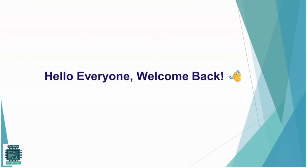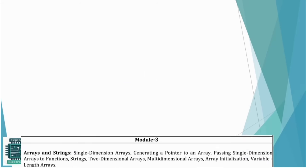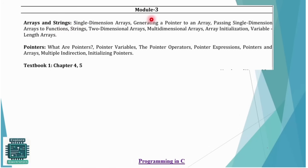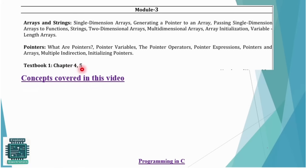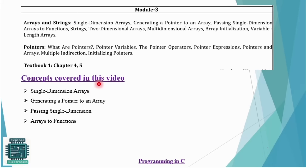Welcome back to Explore Electronics. Today we are going to start with Module 3, which is divided into two chapters. The first chapter is Arrays and Strings, and the second chapter is Pointers. In the first chapter we will see types of arrays, generating a pointer to an array, passing single dimensional arrays to functions, and how strings relate to arrays. In the second chapter it's all about the fundamentals of pointers. The prescribed textbook is 'C: The Complete Reference', chapters four and five.